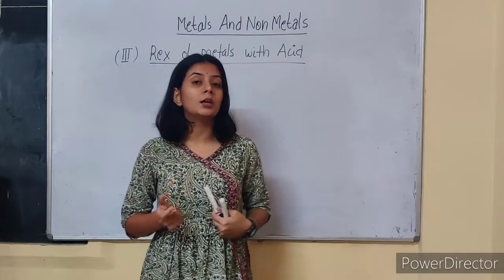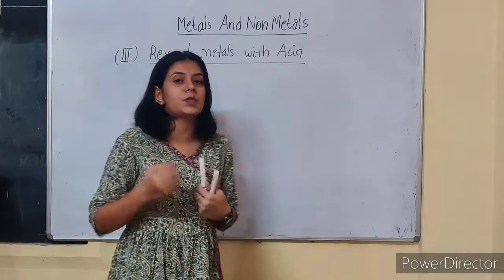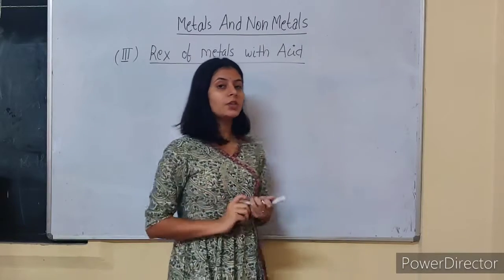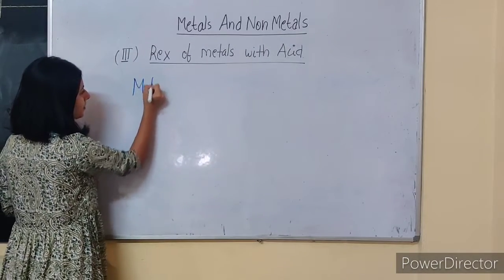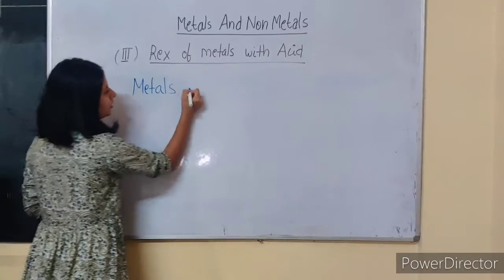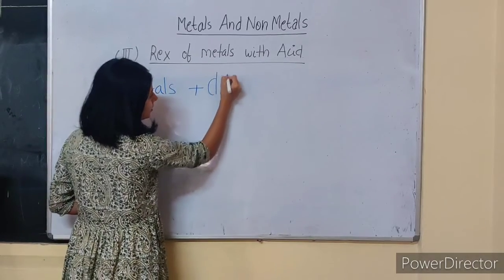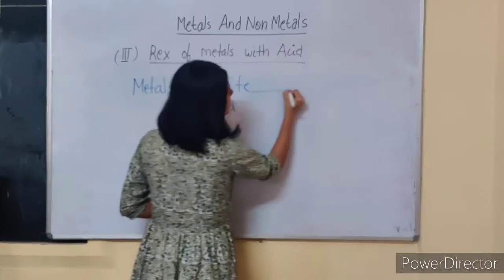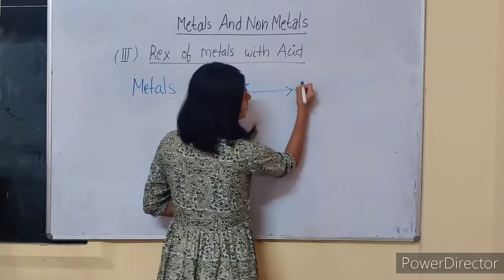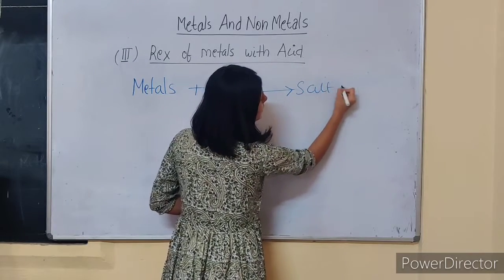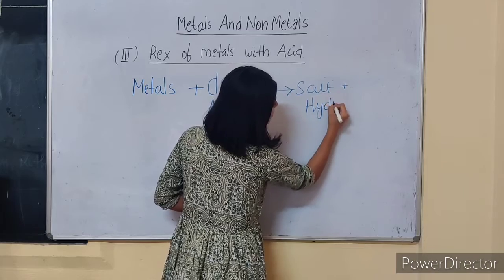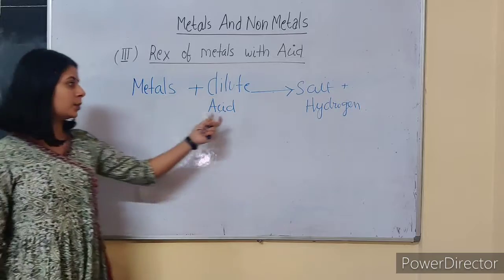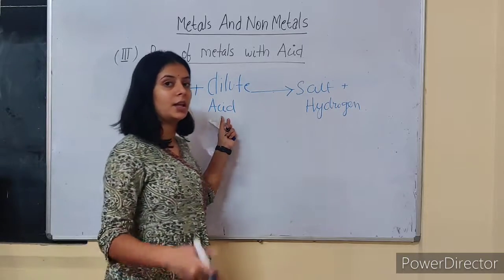We will be seeing the same thing here followed by some new exceptions that you will be learning with respect to metals. The general equation is: metals react with dilute acid and they will produce salt plus hydrogen gas. Hydrogen gas will be evolved in the reaction.